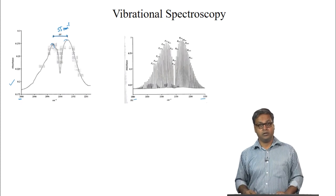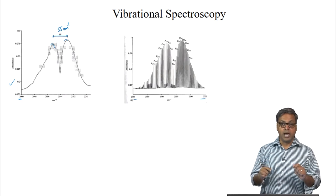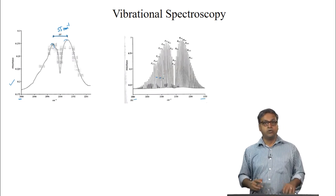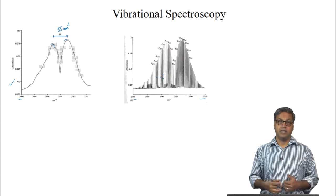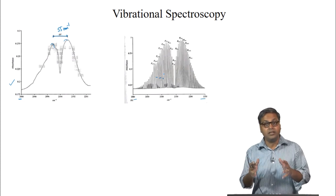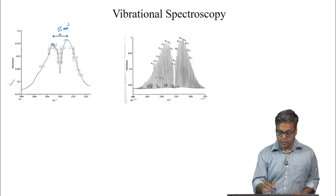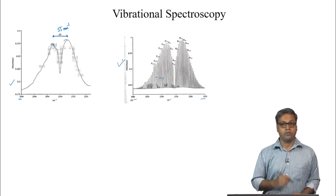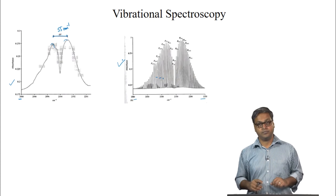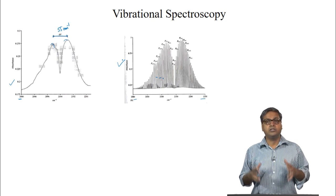At high resolution, we have 2 bands of lines appearing, and these lines are almost equally spaced. We need to explain these additional structures. The spacing between the lines in the high-resolution measurement is of the same order as the carbon monoxide rotational structure. We can guess that this structure is due to the rotational structure of the molecule.